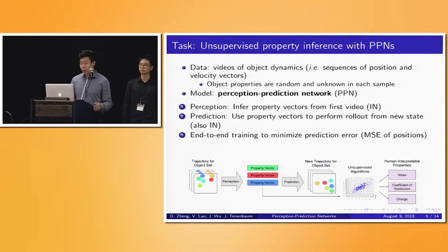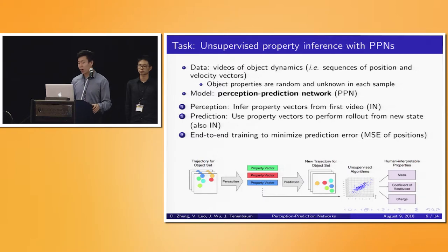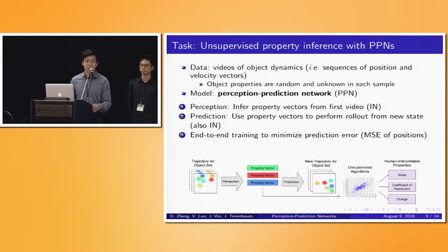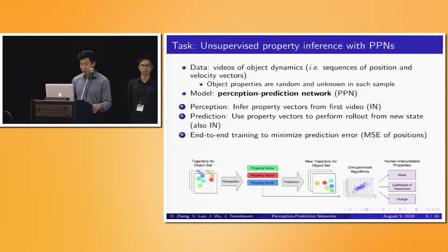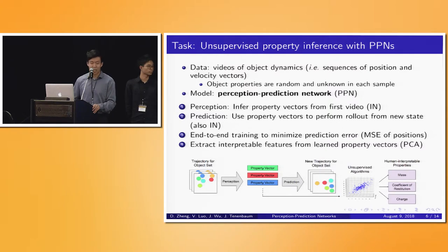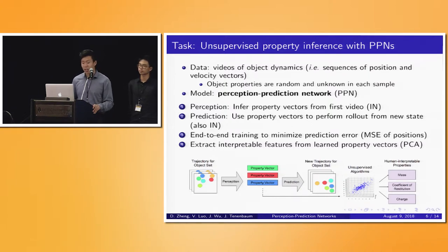Once we've made this rollout prediction on the second video, we can compare it against the true values of the second video during training. We compare the predicted rollout to the true rollout and use the mean squared error of the predicted positions to perform end-to-end training of both the perception and the prediction modules. At no point do we actually supply labels for the object properties themselves. However, what we find is that after training, we can apply unsupervised algorithms to the property vectors and actually extract and discover interpretable features using techniques as simple as principal component analysis.